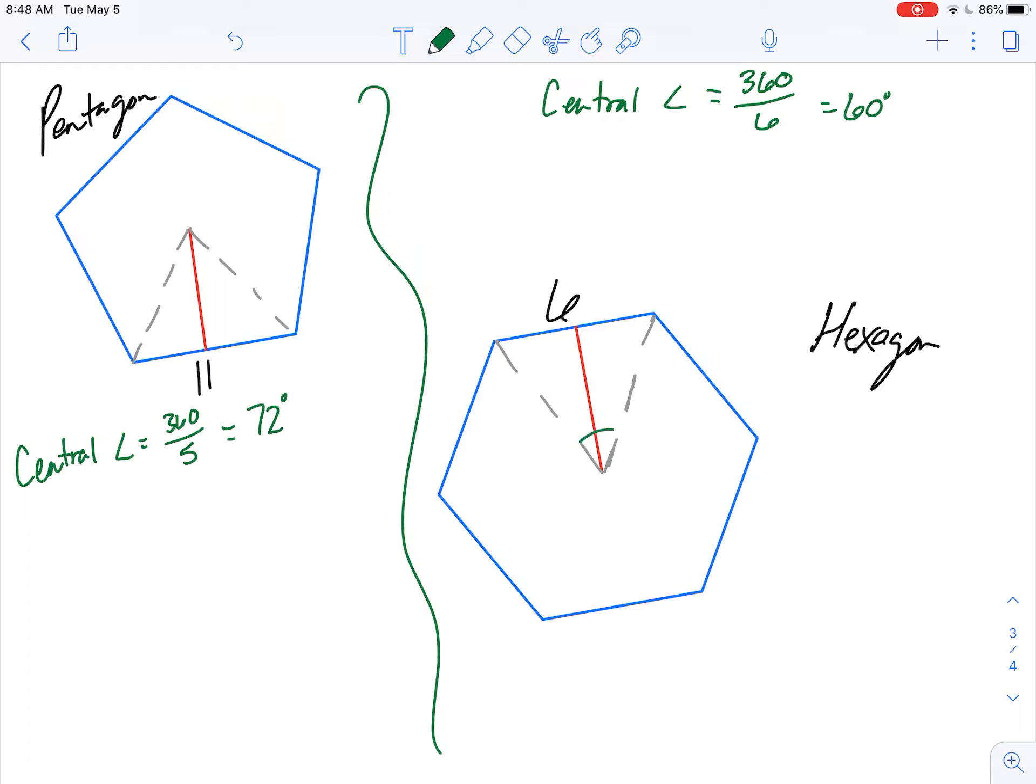But that's the whole angle. I want to split this in half because I don't want the whole angle, I just want half of it over here. So I'm going to get rid of one half. This one is 36 degrees, and this one is 30 degrees.